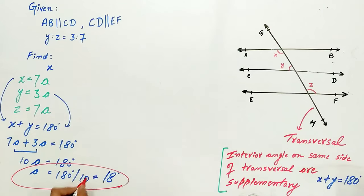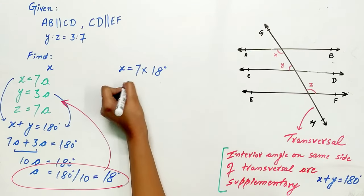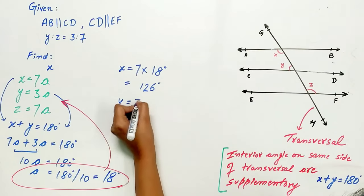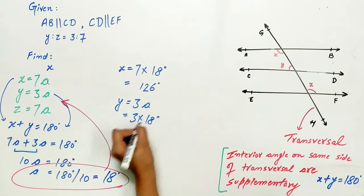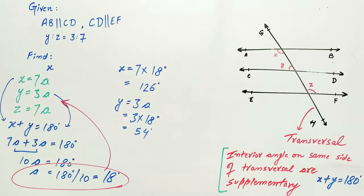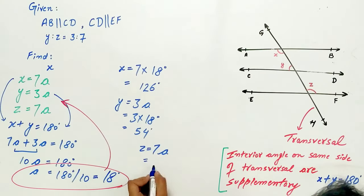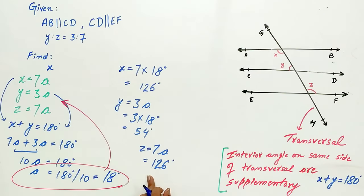Substitute the value of A in X, Y, and Z. X is equal to 7 times 18 which is 126 degrees. Y is 3A, 3 times 18 is 54 degrees. And Z is equal to 7A, and so is X. Hence, the value of Z is 126 degrees.